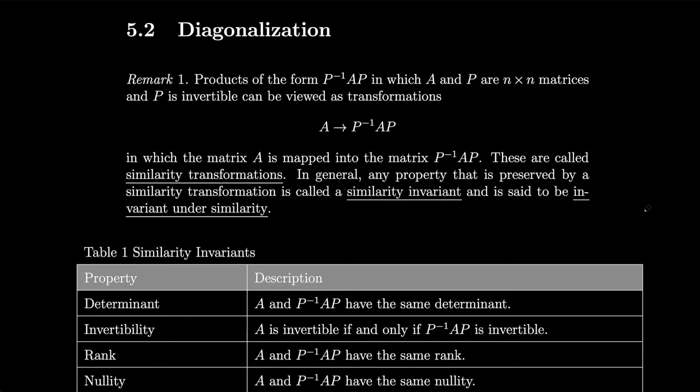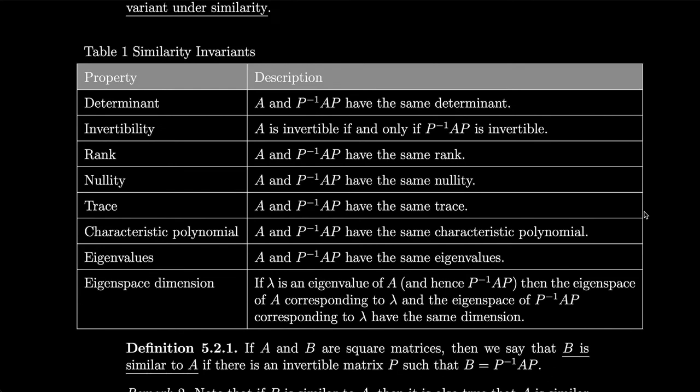We have a whole bunch of different similarity invariants summarized in a table. The determinant: A and P inverse AP have the same determinant. Invertibility: A is invertible if and only if P inverse AP is invertible. Rank, nullity, and trace: A and P inverse AP have the same rank, nullity, and trace. Characteristic polynomial, eigenvalues, and eigenspace dimension: if lambda is an eigenvalue of A and hence P inverse AP, then the eigenspace of A corresponding to lambda and the eigenspace of P inverse AP corresponding to lambda have the same dimension.